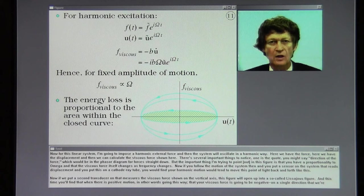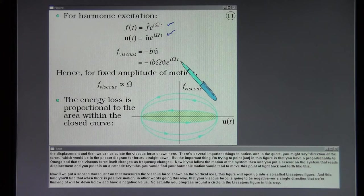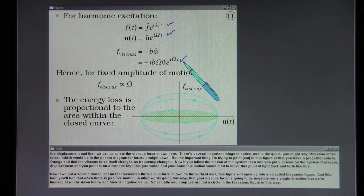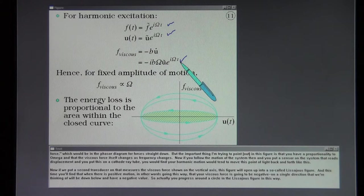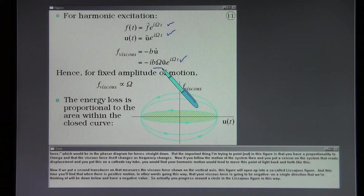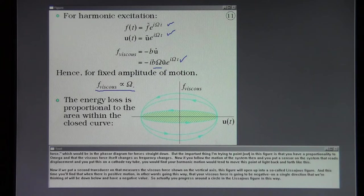Now for this linear system, I'm going to impose a harmonic external force and then the system will oscillate in a harmonic way. Here we have the force, here we have the displacement, and then we can calculate the viscous force shown here. There are several important things to notice. One is the direction of the force, which would be in the phasor diagram for forces straight down. But the important thing I'm trying to point out in this figure is that you have a proportionality to omega and that the viscous force itself changes as frequency changes.